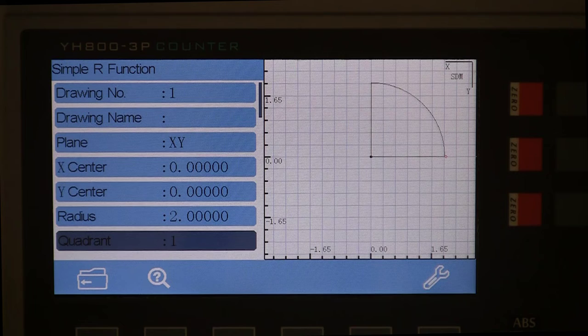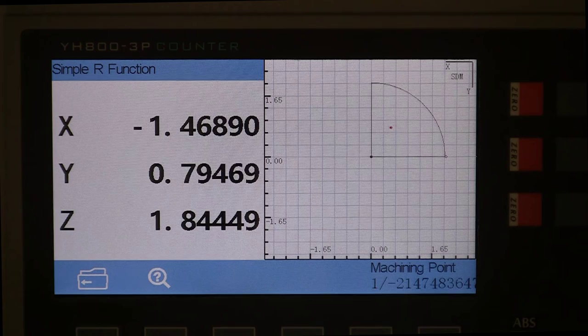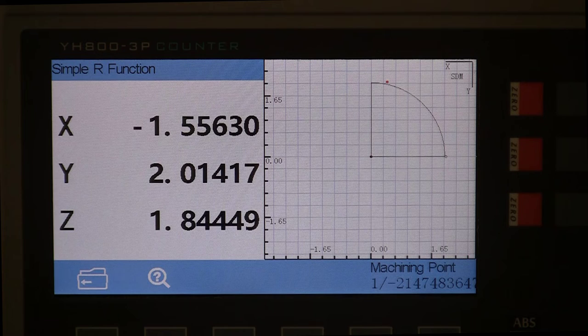It's nice how you can see the dimensions on the graph, the distance to go, etc. And it also shows that you are on the XY plane. And the machining point is 1 out of negative 2 billion.